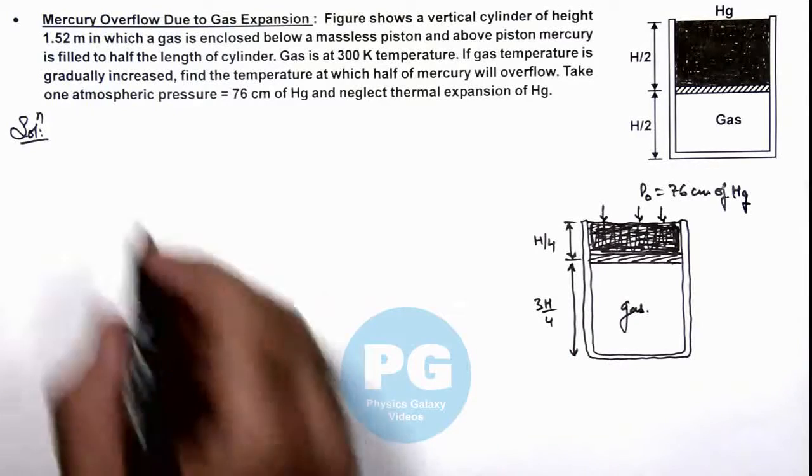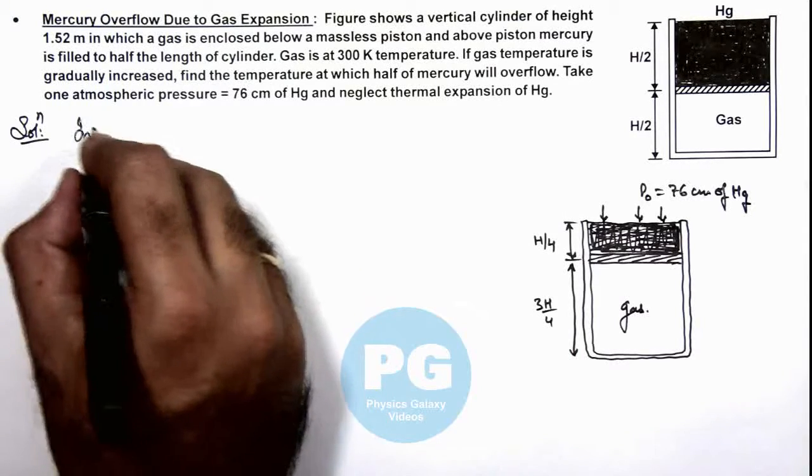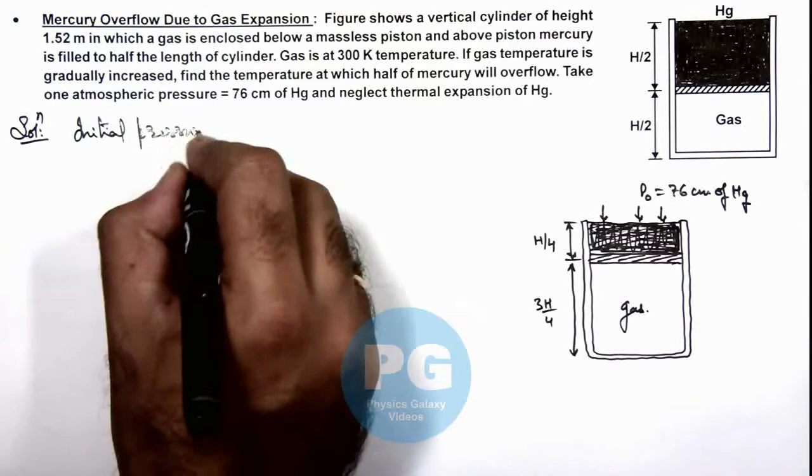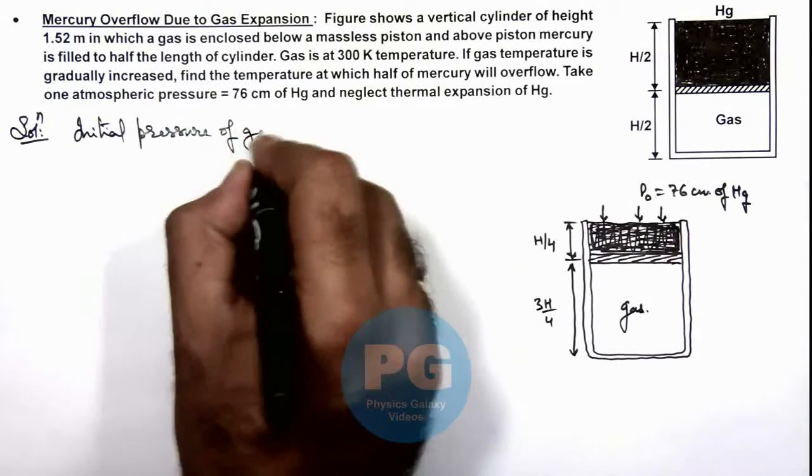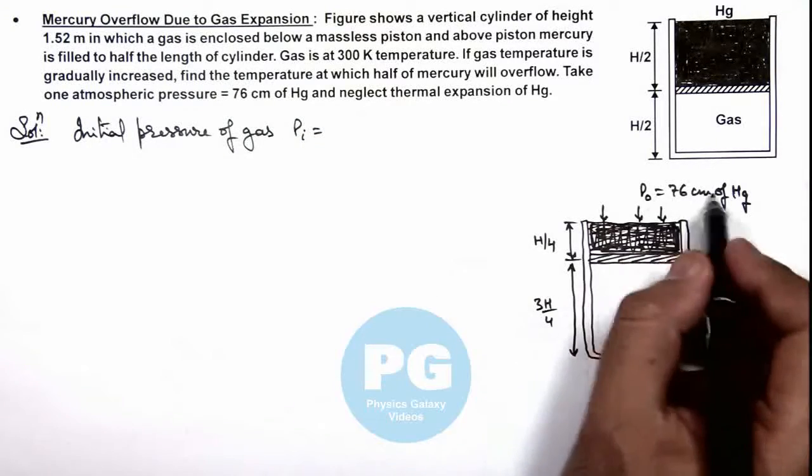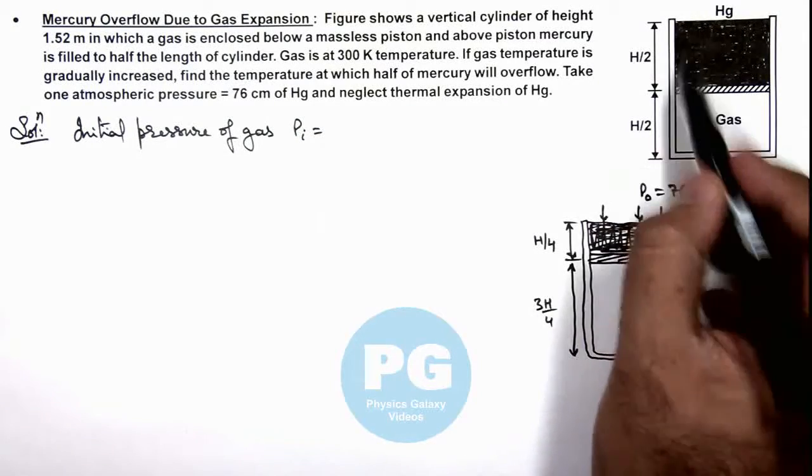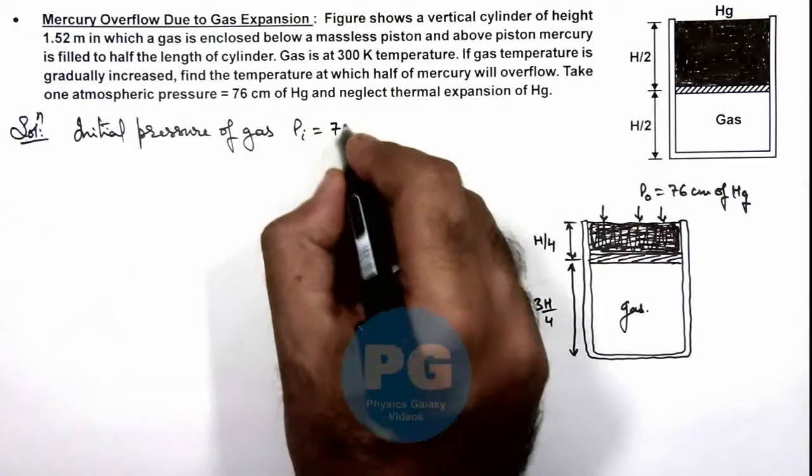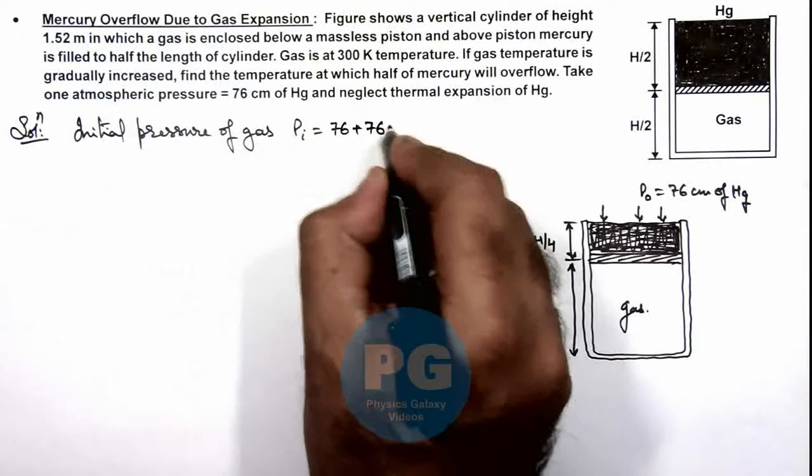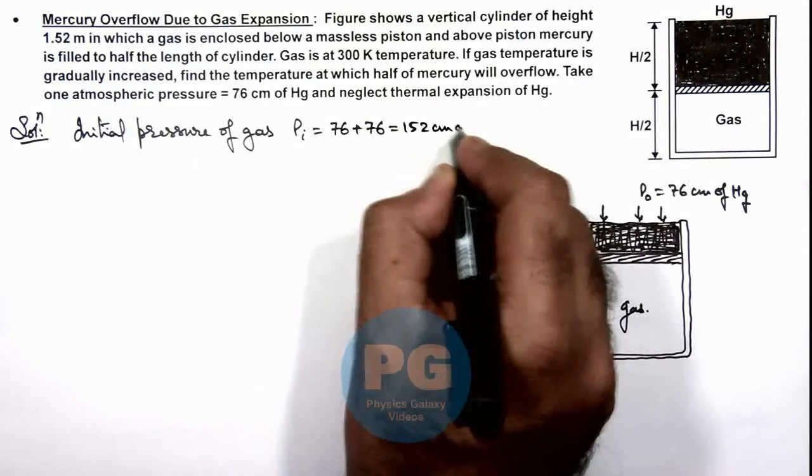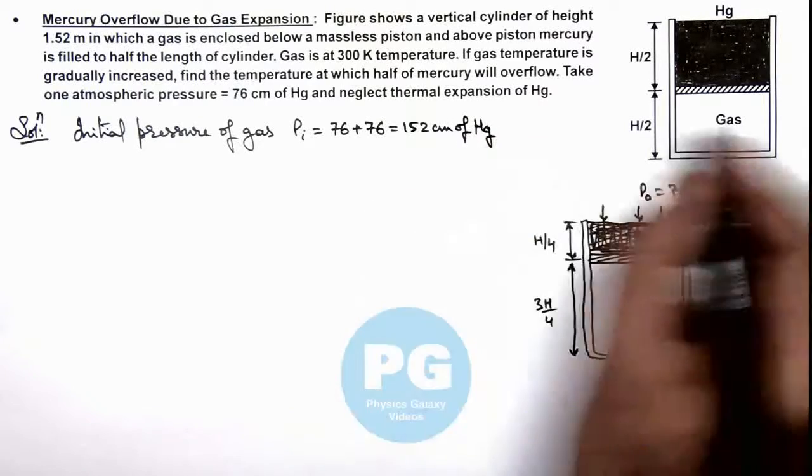Here we can calculate the initial pressure of gas. P initial is equal to atmospheric pressure is 76, and mercury is also filled to the half of 1.52, so this is 76 plus 76, that is 152 centimeters of mercury is the pressure acting on gas.